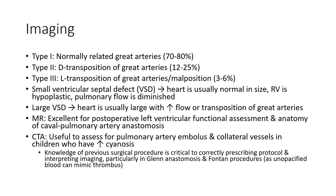In imaging, we divide tricuspid valve atresia into some subtypes. Type 1: normally related great arteries, 70% to 80%. Type 2: D-transposition of great arteries, 12% to 25%. Type 3: L-transposition of great arteries, around 3% to 6%. There is a small ventricle with ventricular septal defect (VSD).